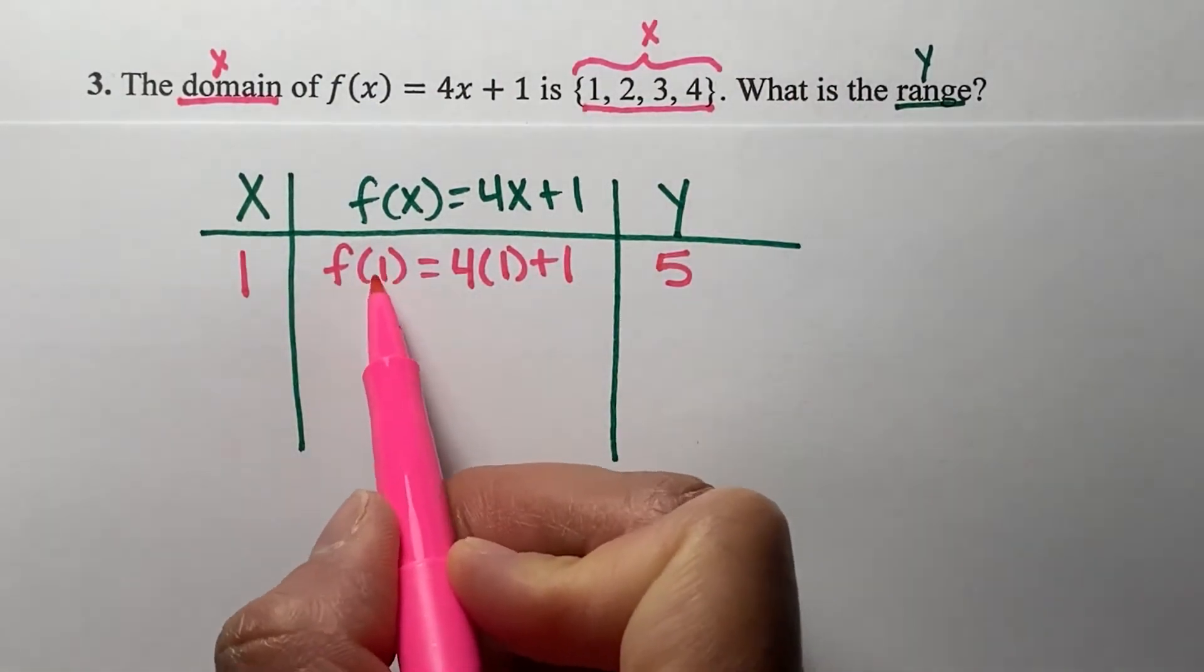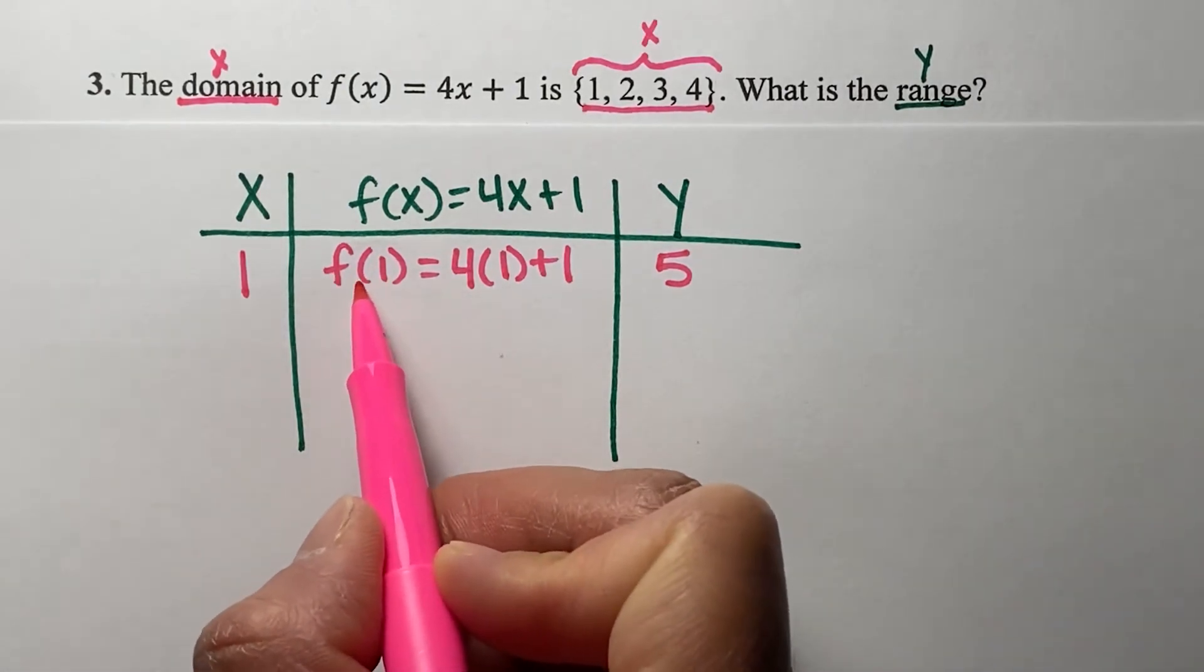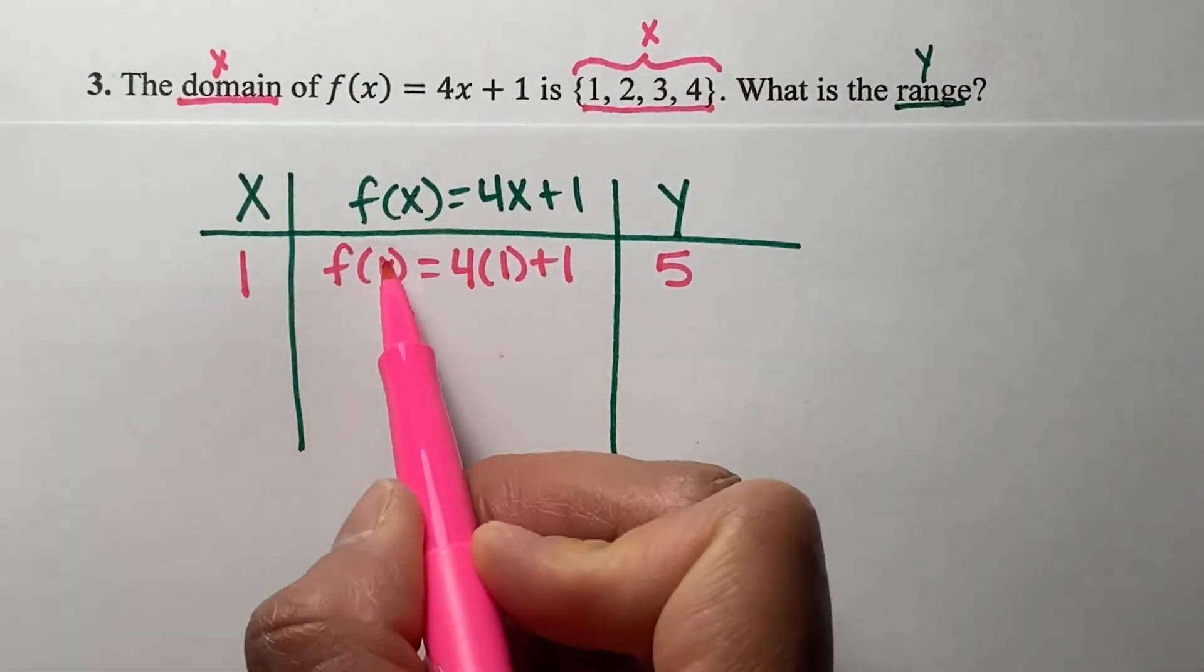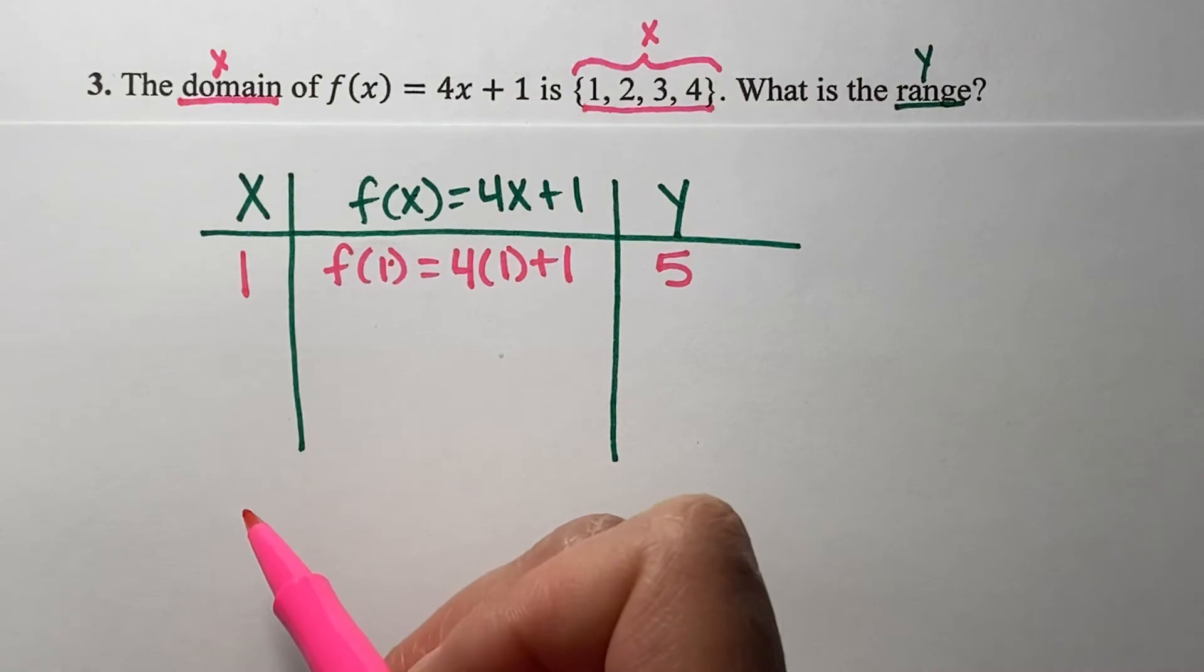Again, this is my function notation. I'm not multiplying f and 1. I'm just plugging in, replacing x with 1. And I will do that with every single value here for the domain.